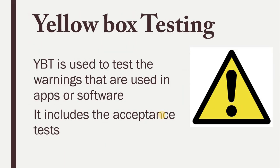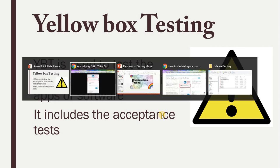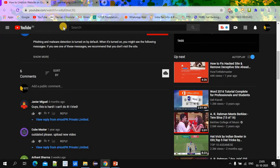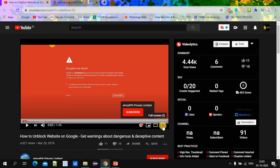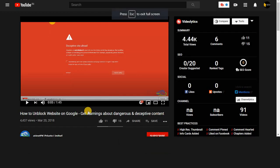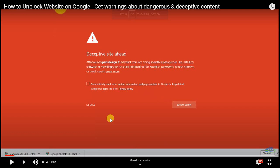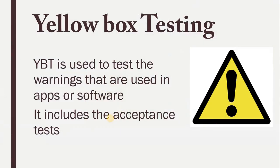Coming to yellow box testing — yellow box testing is used to validate the warnings of the system over the software. While accessing some applications or websites, in some organizations or on personal devices, we sometimes see these kinds of warnings. These warning details can also be tested as part of acceptance testing techniques. That covers the different types involved in the software development life cycle.